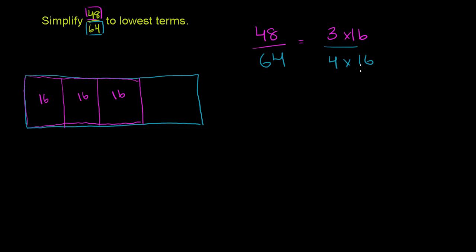Now, 64 is 4 groups of 16. So we could make, if you look at the 64, that is a 16, that is a 16, that is a 16, and then that is another 16. These should all be the same length. I drew it a little bit off.